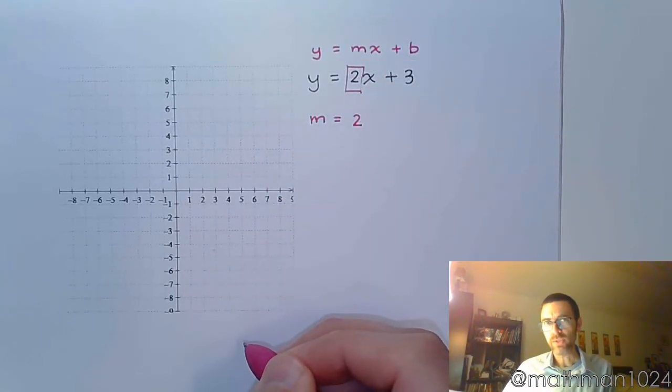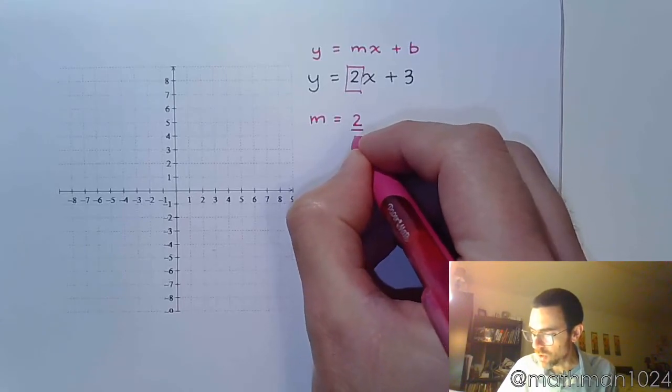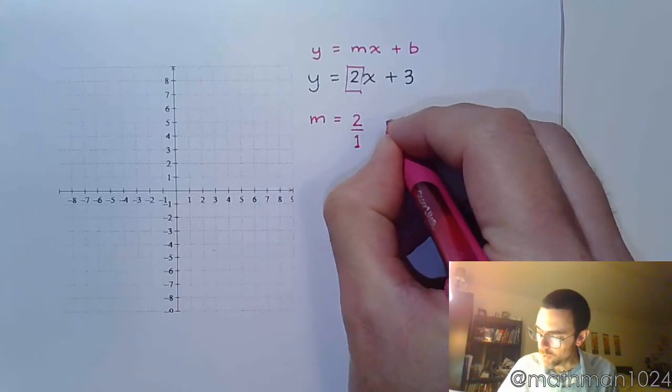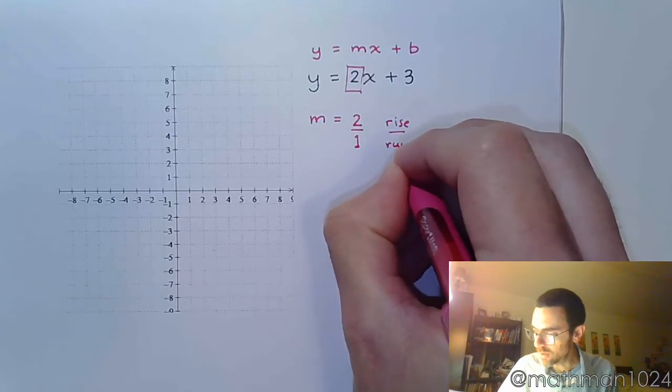A lot of times we like to think about slope as a fraction, as a ratio of rise to run. So even though 2 is simplified, we like to say 2 over 1 so we can clearly see how things match up with rise to run.